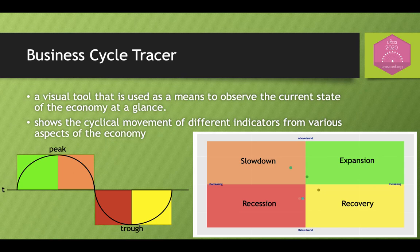As most of you are familiar with, a business cycle tracer is a visual tool that shows the current state of the economy. To be precise, it shows the cyclical phase of a bunch of chosen indicators that are thought to be representing the economy as a whole. As you see, each quadrant of the business cycle tracer is a phase in the cyclical moment, depending on whether it is above or below the trend, as well as decreasing or increasing.